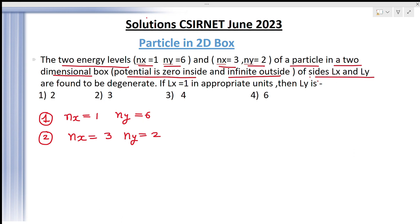The sides LX and LY are found to be degenerate. It means that these two levels are having same energy. It means E1 is equal to E2. Both the levels are existing at the same level.